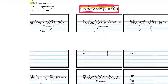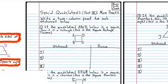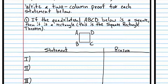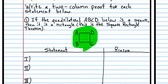We're going to start off with some really easy proofs. If the quadrilateral ABCD below is a square, then it's a rectangle. So if this quadrilateral is a square, that shows it must be a rectangle. But we have to prove that.